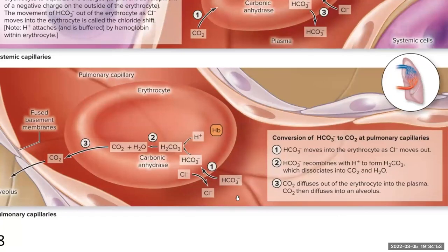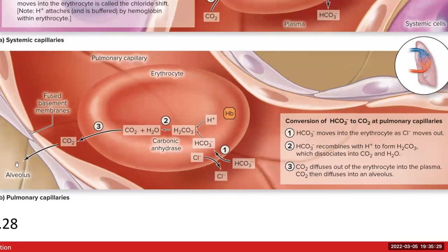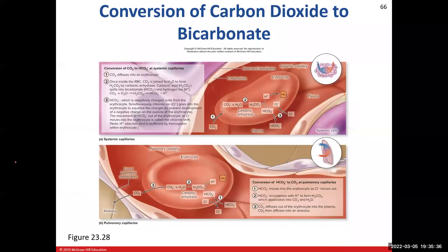When the blood arrives at the pulmonary capillaries, we reverse the whole process. Bicarbonate enters back into the red blood cell, chloride exits, maintaining electrical balance. The hydrogen ion comes off hemoglobin, combines with bicarbonate to reform carbonic acid, which carbonic anhydrase then breaks back down into CO2 and water. Carbon dioxide exits the red blood cell, enters the alveolus, and is exhaled. That is how the majority of our CO2 moves through the blood.